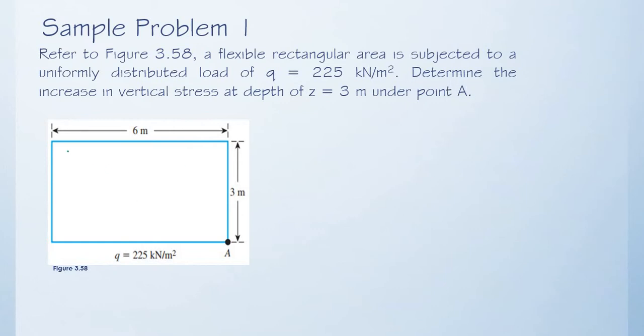We take a look at this figure. We have here a rectangular loaded area. 6 meters is our L, 3 meters is our B. q is given to be 225 kilonewton per meter squared. We are to determine the effect of this load at point A, and point A is 3 meters below this corner. We can observe that point A is at the corner of this rectangular area.